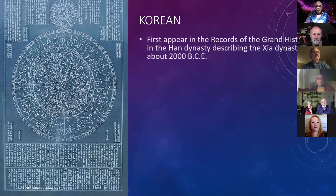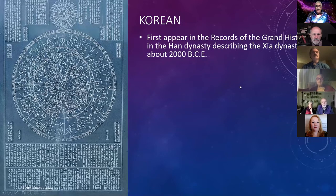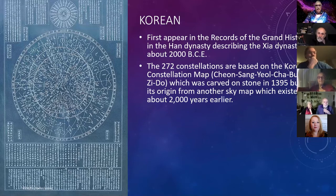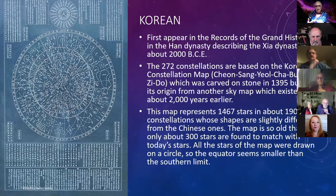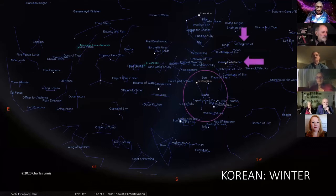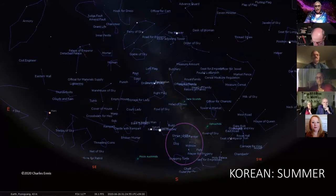There's the map of the Korean sky. These first appear in the records of the Grand Historian of the Han Dynasty describing the Jia Dynasty around 2000 BCE. They have 272 asterisms, based on the Korean constellation map carved on stone in 1395, but with origins from a sky map 2,000 years earlier. It represents 1,467 stars and about 190 constellations, slightly different from the Chinese ones. It's so old that only about 300 stars still match what we see in the sky. The Korean asterism is very similar to the Chinese — there's Orion, the Hyades, the Pleiades, and the teapot.